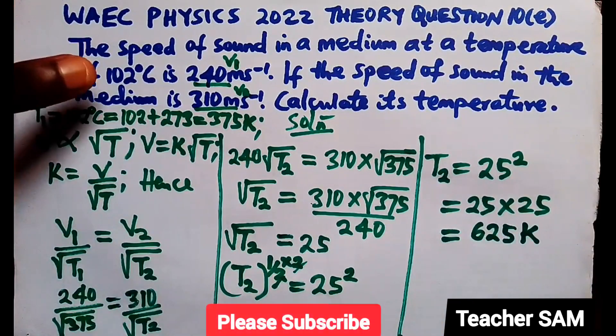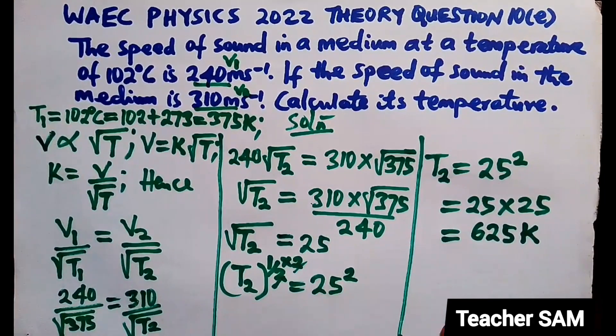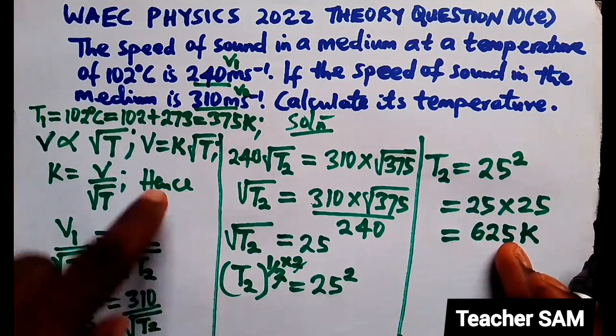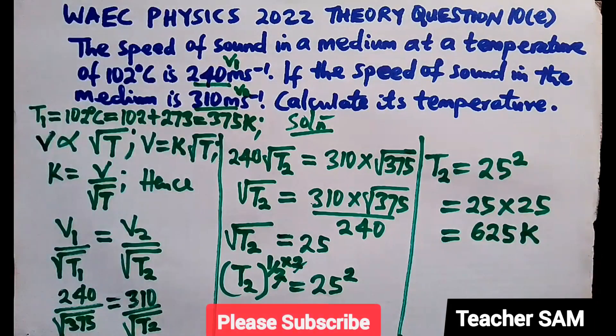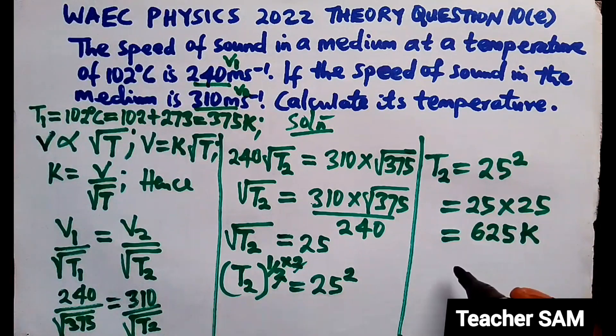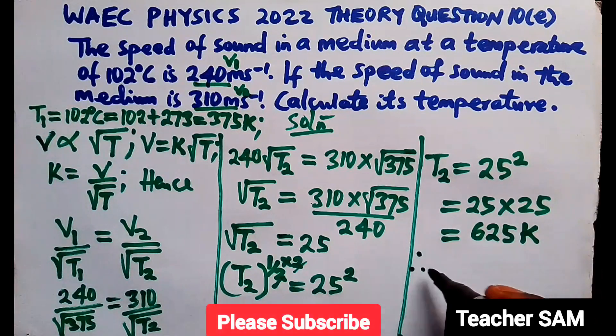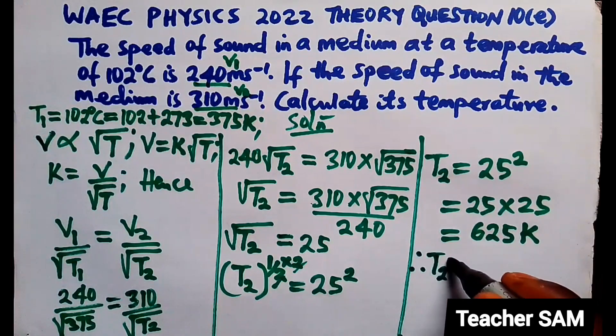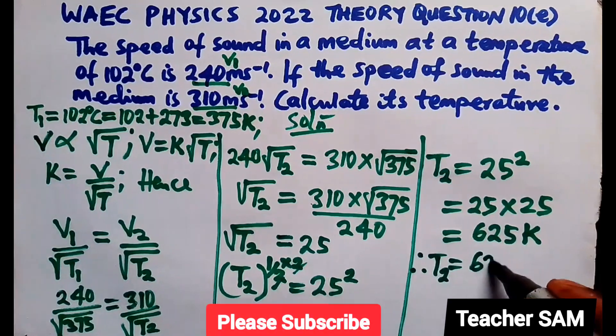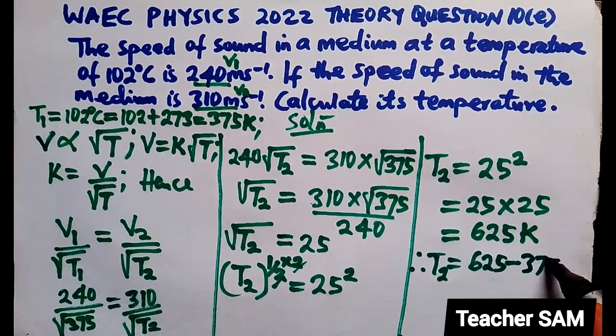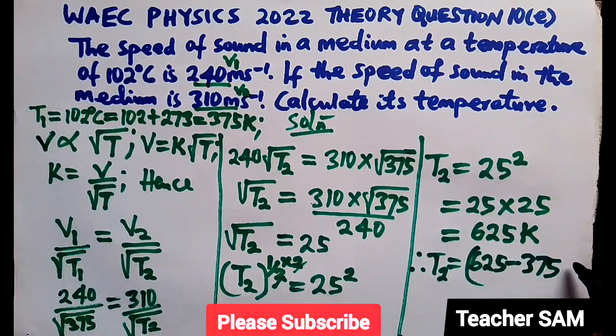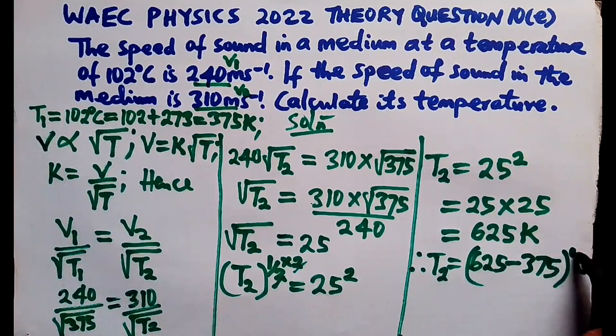Don't forget the temperature was given to us in degrees Celsius. So, let's return this to degrees Celsius. Now, how do we do that? Just to subtract. Remember, we added 273 to change it to Kelvin. So, we just subtract that as well. So, we now say that therefore, our T2 will be equals to 625 minus 375. Now, everything here is in degrees Celsius.